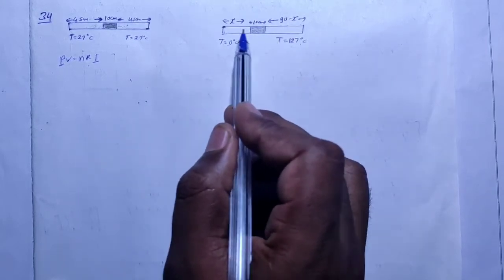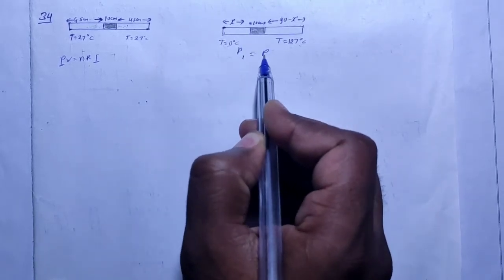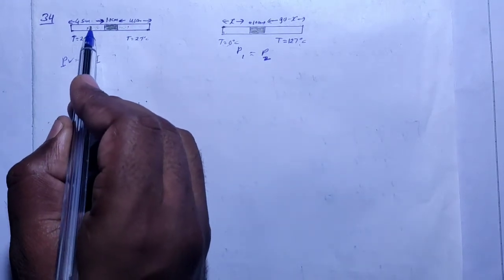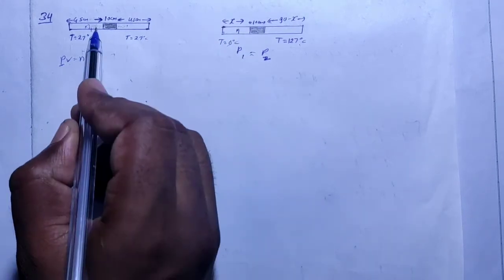When the pressure is reduced on one side, the mercury shifts. If the cooler side contracts by x, it becomes x cm. The hotter side becomes 90 minus x, because the mercury is 10 cm, so the total air space is 90 cm. This is higher temperature, this is lower temperature. Now, the pressure is the same. P1 equals P2. The pressure is the same.